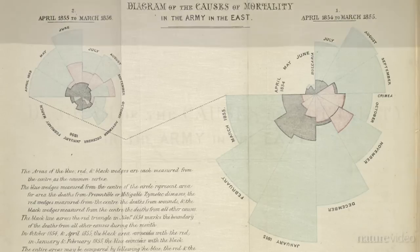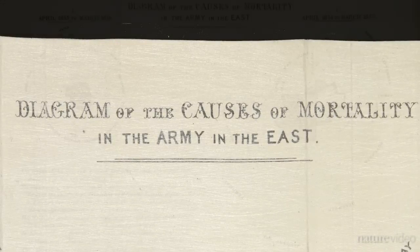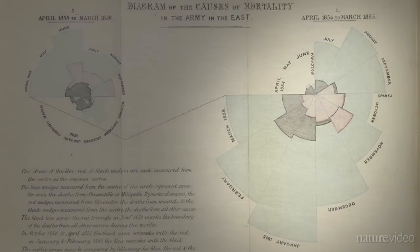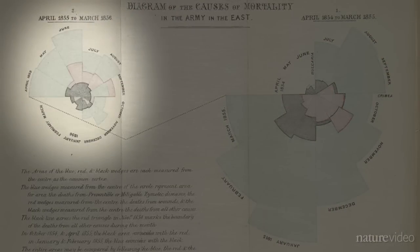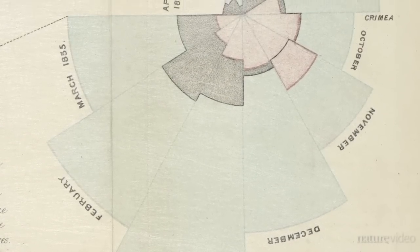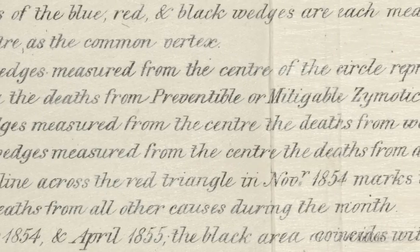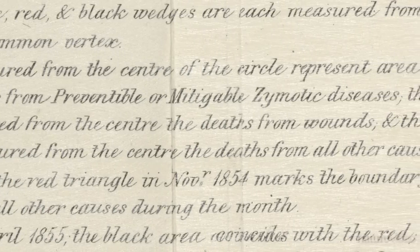What's really quite remarkable here is that she shows that by implementation of sanitary reforms you have a really dramatic reduction in the number of deaths that were occurring due to poor sanitary conditions in hospitals. This was a very political diagram that she gave to all sorts of government ministers with the specific intention of driving through massive public health reforms.